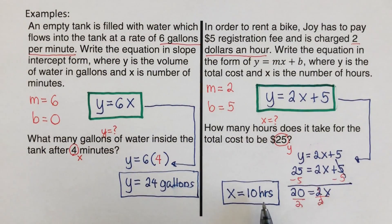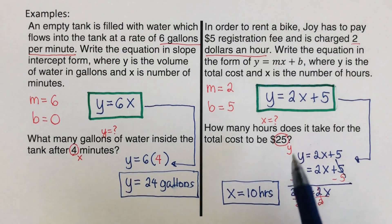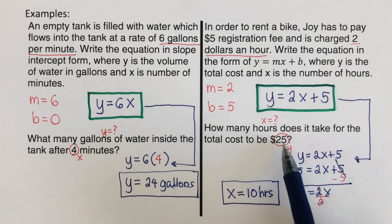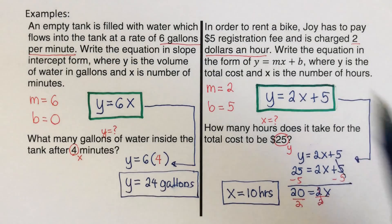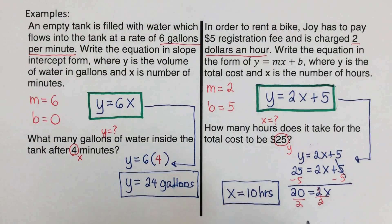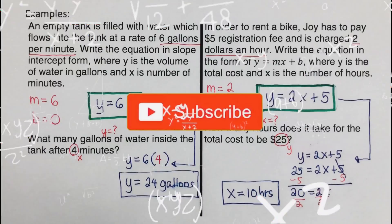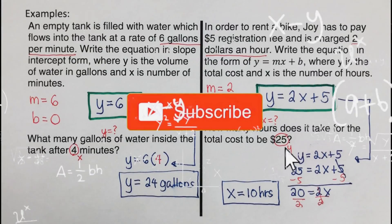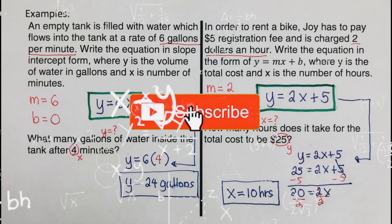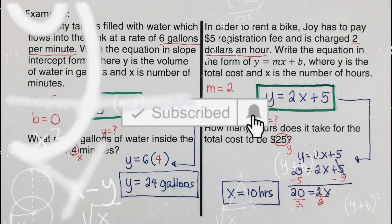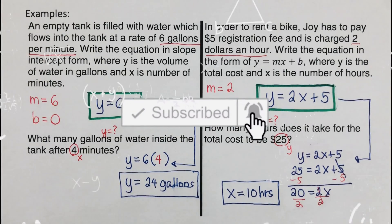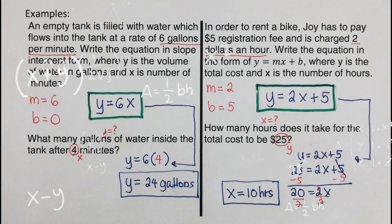In 10 hours, Joy is charged $25 for renting the bike. Did you get the same answer? Good. If you find this video helpful, hit like and subscribe for more math videos. See ya.